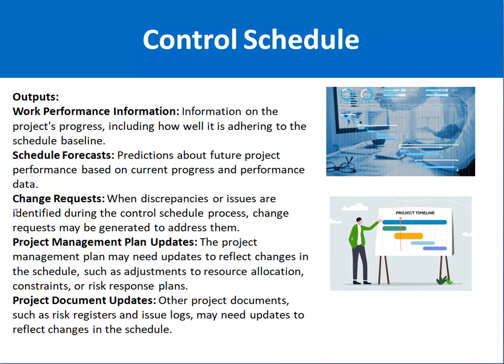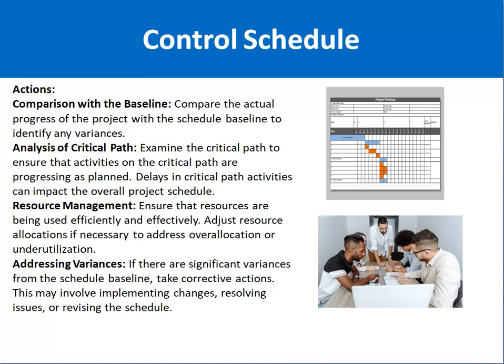Updates to the Project Management Plan may be needed, such as adjustments to resource allocation, constraints — meaning limitations in terms of time and cost — and risk response planning, which addresses how uncertainties and risks in the project will be managed. Project Document Updates is another output, meaning documents like the risk register and issue log may need to be updated as an output of this process.